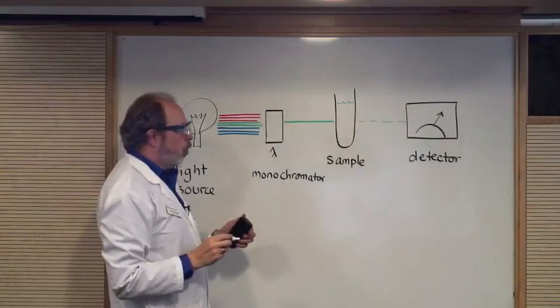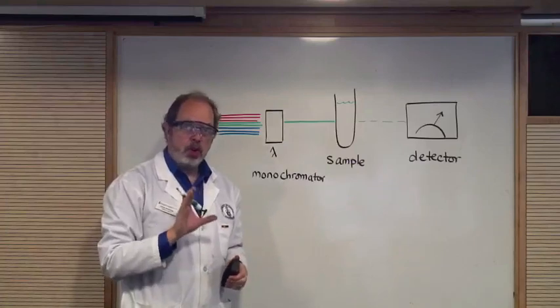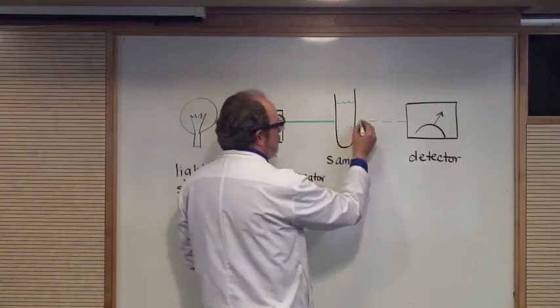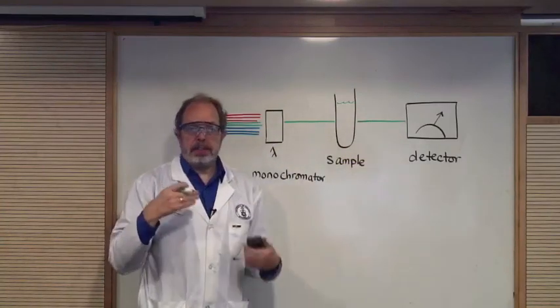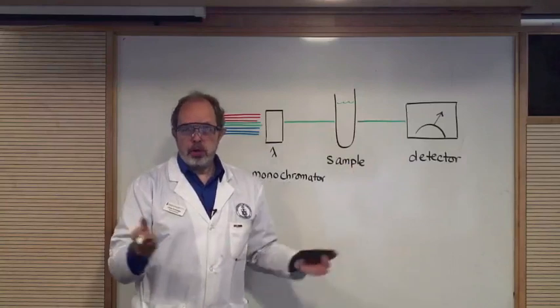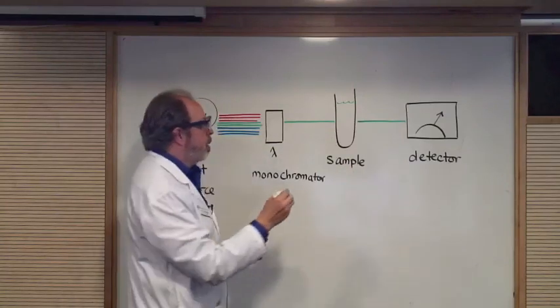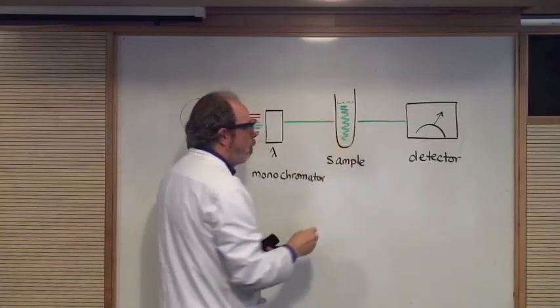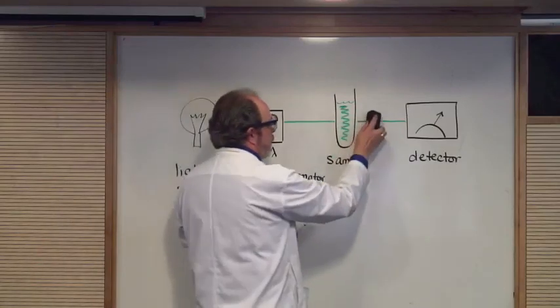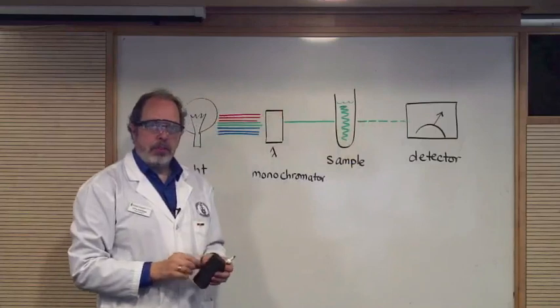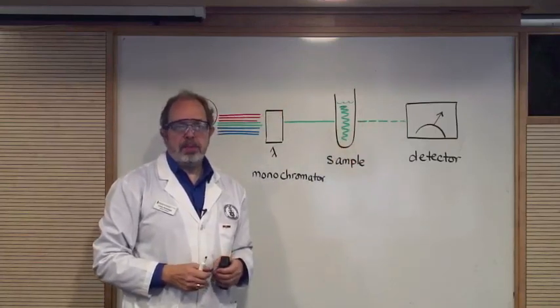Now, first of all, you put a blank solution in there. That is something that is not going to absorb any light at all, and so all of the light passes through. And you adjust the detector to say this is 100% of the light coming through, or zero absorbance. Then you can put your sample in, and I'll color this. So we've now got a sample in place, and that will absorb some light. And you're going to get slightly less light going through, and the detector will tell you how much of that light has been absorbed.